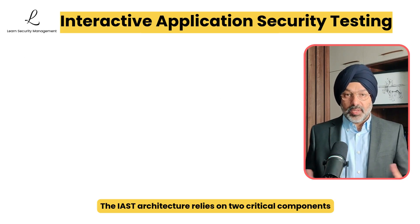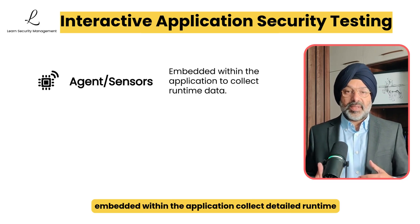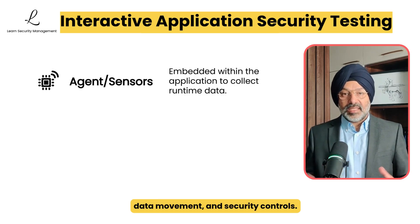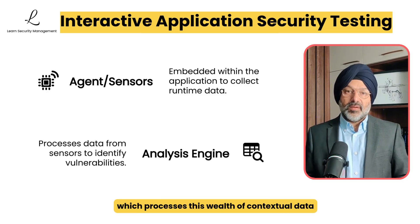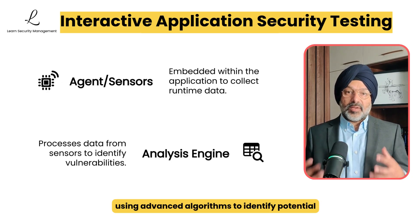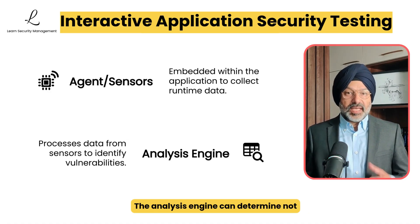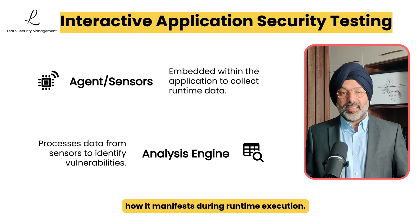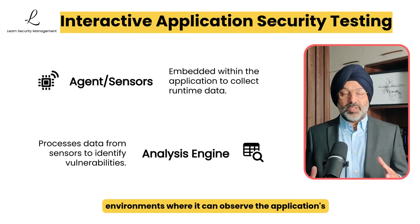The IAST architecture relies on two critical components working in tandem. The agent or sensors embedded within the application collect detailed runtime data about code execution, data movement, and security controls. This information is continuously fed to the analysis engine, which processes this contextual data using advanced algorithms to identify potential security vulnerabilities with high accuracy. The analysis engine can determine not just that a vulnerability exists, but precisely how it manifests during runtime execution.